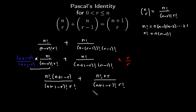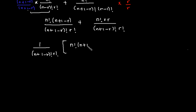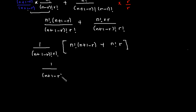Now we have a common denominator, so we can factor it out. That gives us one over n plus one minus r factorial times r factorial, multiplied by what we have in the numerator.